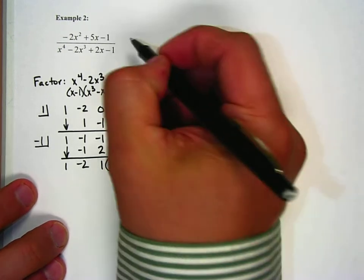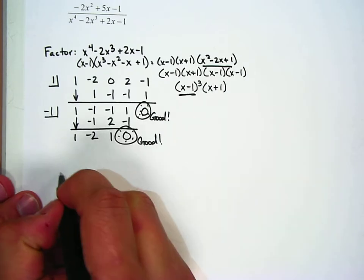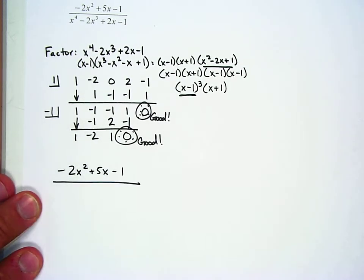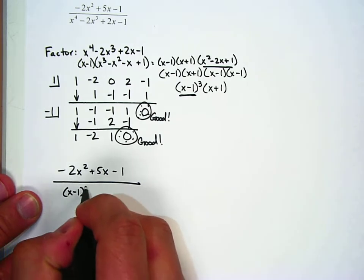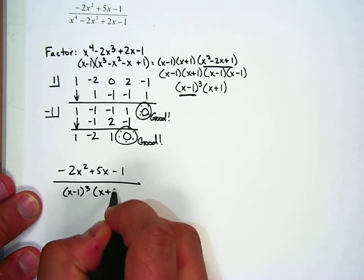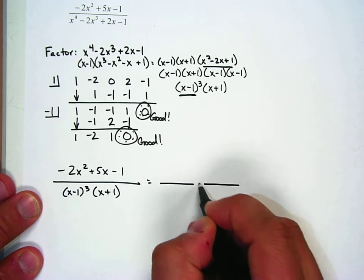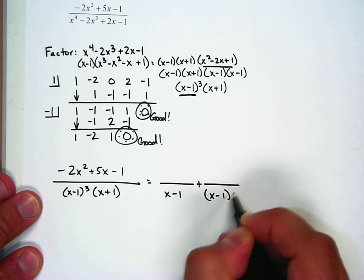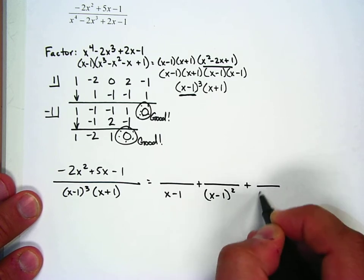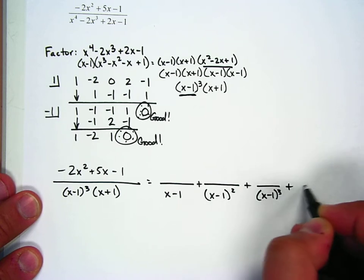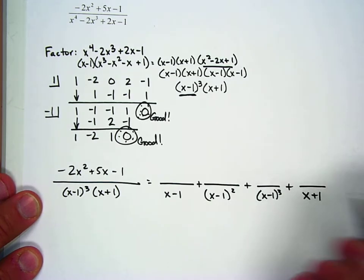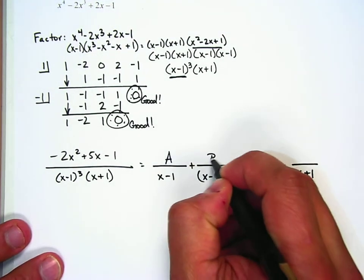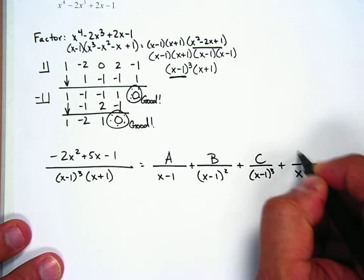So we have negative 2x squared plus 5x minus 1 all over x minus 1 cubed times x plus 1. We need to set up the partial fractions three times for the repeated linear factor: A over x minus 1 to the first, B over x minus 1 squared, C over x minus 1 cubed, and D over x plus 1.